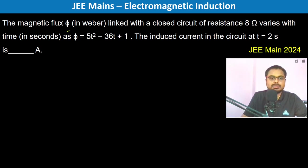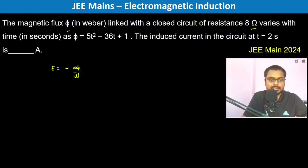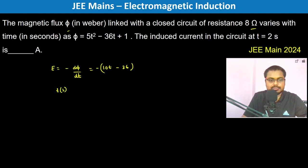The magnetic flux linked with a closed circuit of 8 ohm varies, and the induced EMF is going to be minus dΦ/dt, which gives 10t minus 36. At t equals 2 seconds, we have minus (20 minus 36), which equals 16 volts.